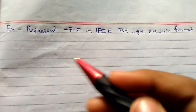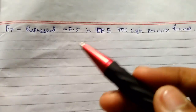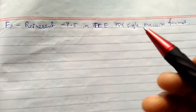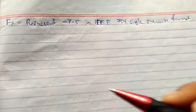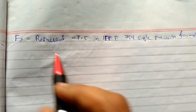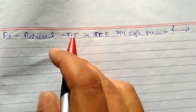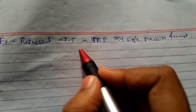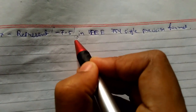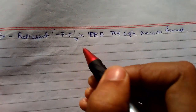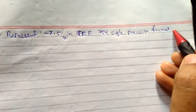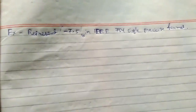Welcome back. Today we will be continuing and seeing examples on the IEEE standard for floating point representation. We will see single and double precision format examples. The question is: represent -7.5 in decimal in IEEE 754 single precision format, which can also be written as the 32-bit format.